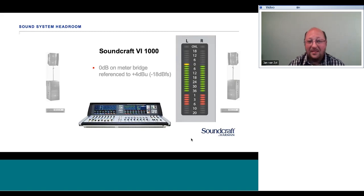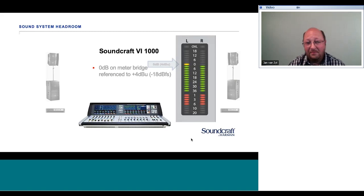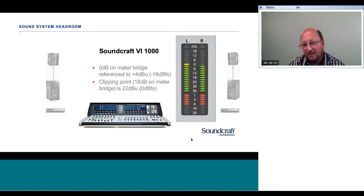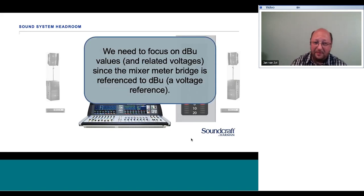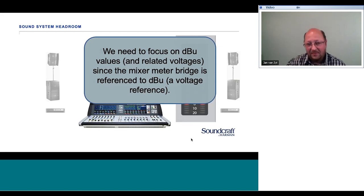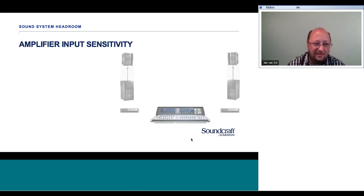On the VI-1000, 0 dB on the meter bridge is referenced to +4 dBU, which is −18 dBFS in digital terms since it's a digital desk. The analog output when reading 0 dB on the meter bridge is 4 dBU, or 1.23 volts. At maximum — 18 dB on the meter bridge — that equates to 22 dBU and 0 dBFS. It's important to look at these dBU values because the meter bridge is referenced to dBU, a voltage reference, which we'll use to find the clipping point on the amplifier.